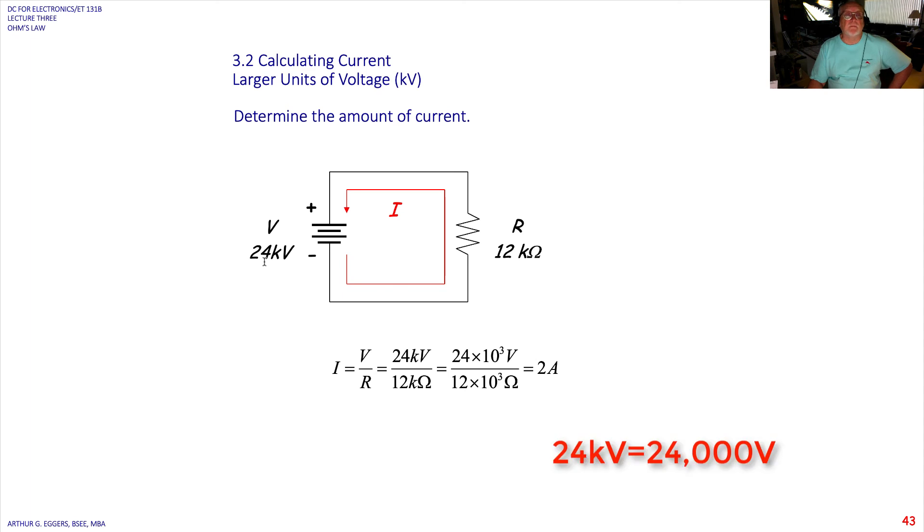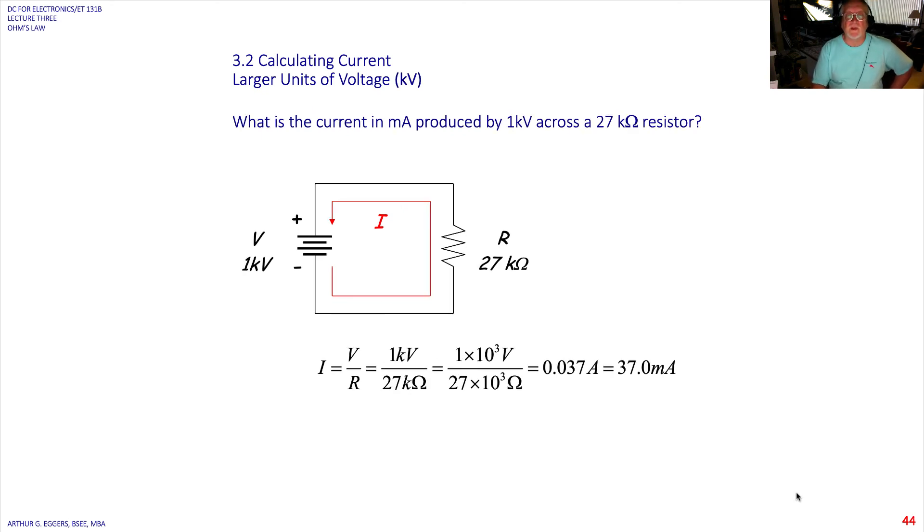Now we have a big, big voltage source. This is 24,000 volts of source here, which is, you'll recall, your tech said that would be typical inside of a television. And we have a 12,000 ohm resistor. So this one sets up nice because, again, you can see the K's cancel. 10 to the third, 10 to the third cancels. 12 goes into 24 two times for 2 amps. You've seen that. You saw that one earlier.